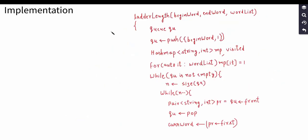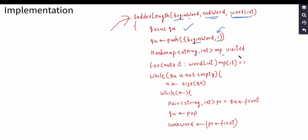Let's see the implementation. The ladderLength function takes the begin word, end word, and word list array. We declare a queue and initialize it with the begin word and integer 1 representing the number of words encountered so far. We declare a hash map 'mp' which will be used to check if a particular word is present in the word list, and a 'visited' hash map to check if a particular word has already been used.